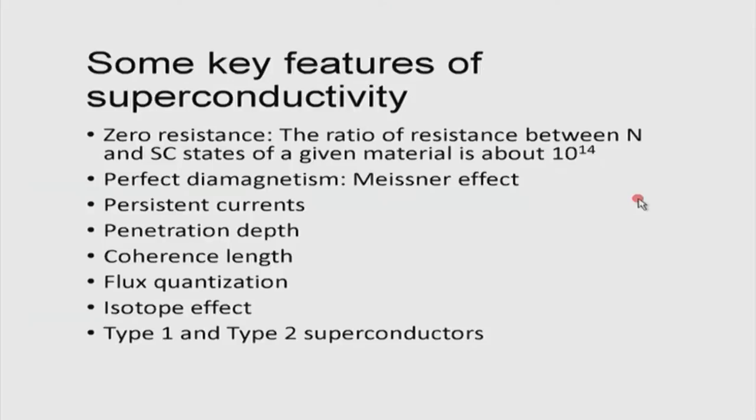In a good superconductor, it can take many many years for the current to die. A nearly zero resistance gives you what is known as a perfect conductor, but a perfect conductor is not a superconductor. You also need a perfect diamagnet. A superconductor is at the same time a perfect conductor and a perfect diamagnet.